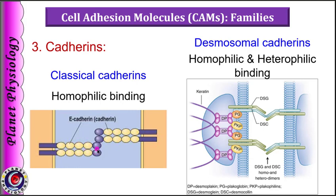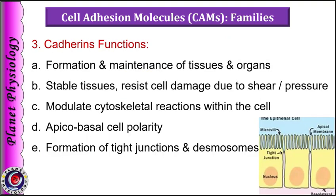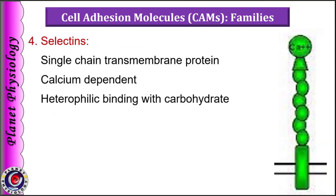Classical cadherins show homophilic binding while desmosomal cadherins show both homophilic and heterophilic bindings. Cadherin family adhesion molecules play an essential role in morphogenesis and homeostasis. Classical cadherins like E-cadherins play an important role during embryogenesis in formation of tissues and organs, and later to maintain their structure as well as cellular movement. Desmosomal cadherins resist cell damage due to shear or pressure. The intracellular domains of cadherins attach to the cytoskeleton and modulate their reactions.